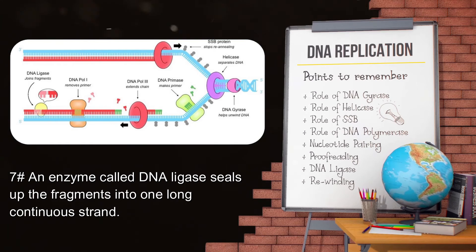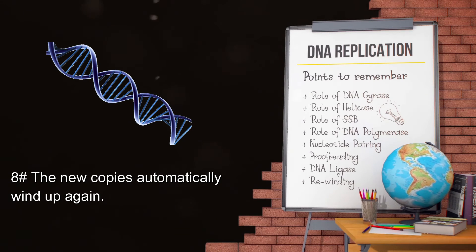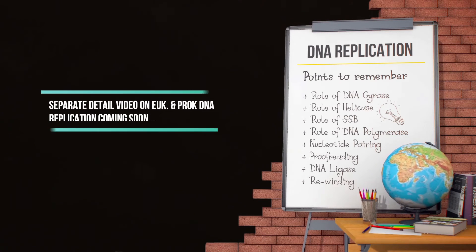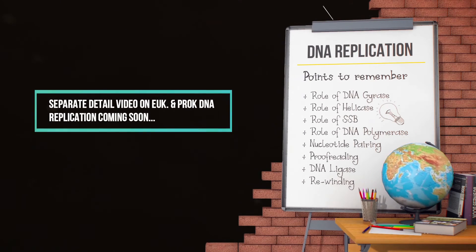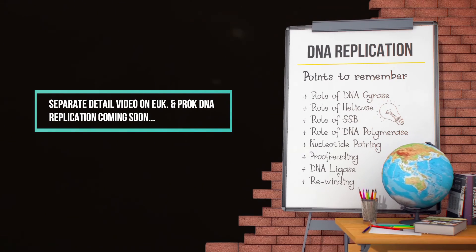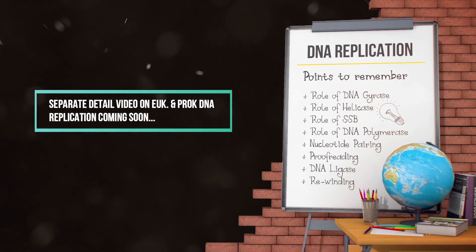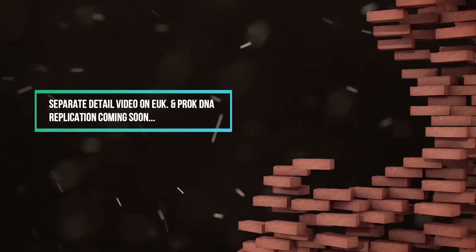Step seven: an enzyme called DNA ligase seals up the fragments into one long continuous strand. Step eight: the new copies automatically wind up again. These are the major steps involved in DNA replication. For a detailed understanding, please subscribe to our channel as we will upload more videos soon.